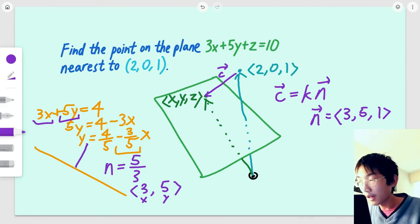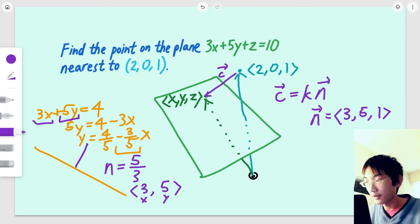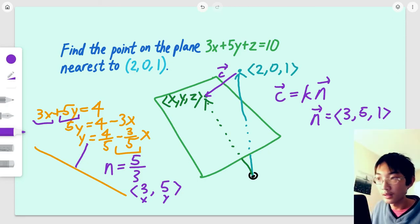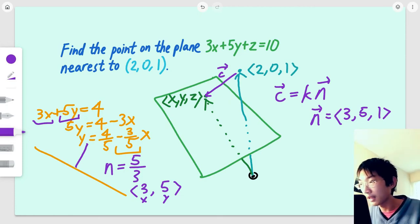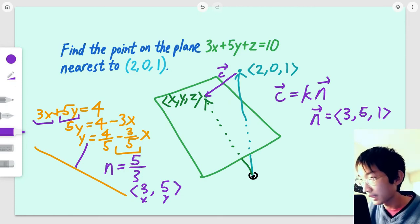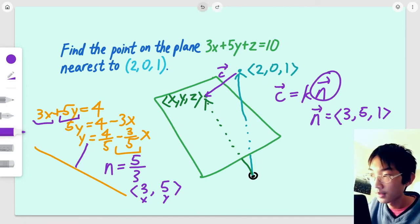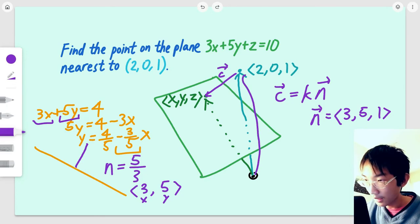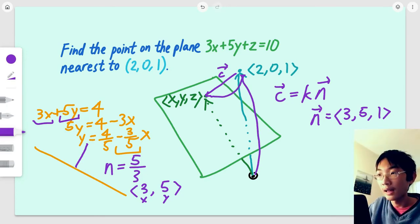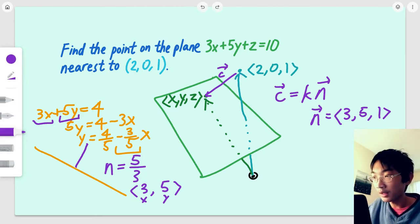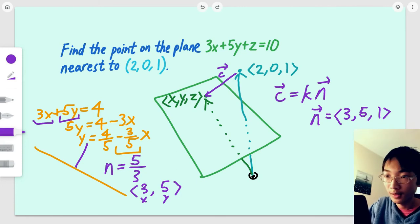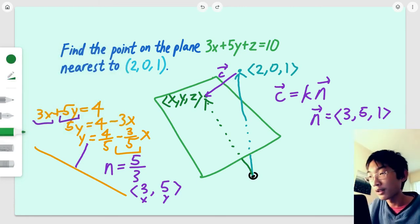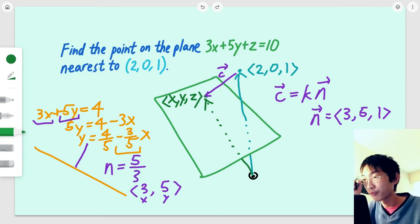So now we have one equation for our connecting vector. But we need two to form a system and find out what it is exactly. We now know what n is, but we don't know what k is. We have our vector (2, 0, 1), which goes from here to here. When we add it to the c vector, we go to the (x, y, z) point. And the (x, y, z) point must satisfy the plane equation in order to be on the plane.